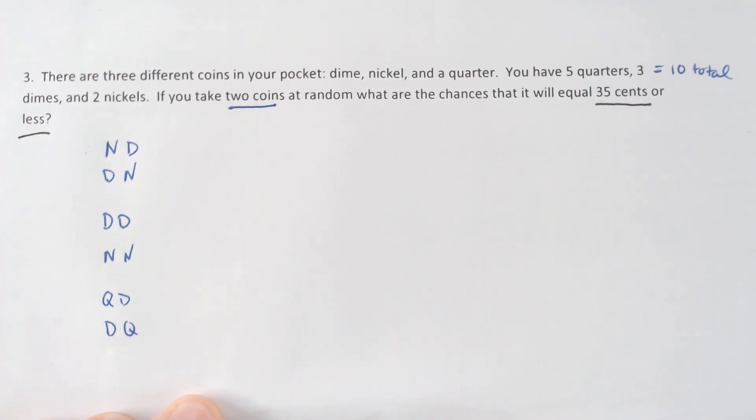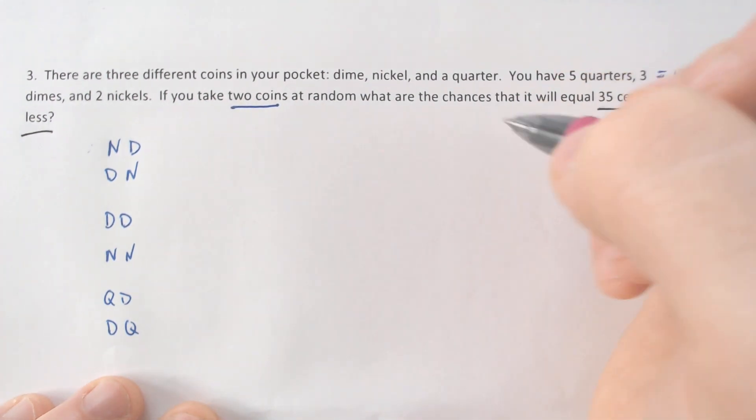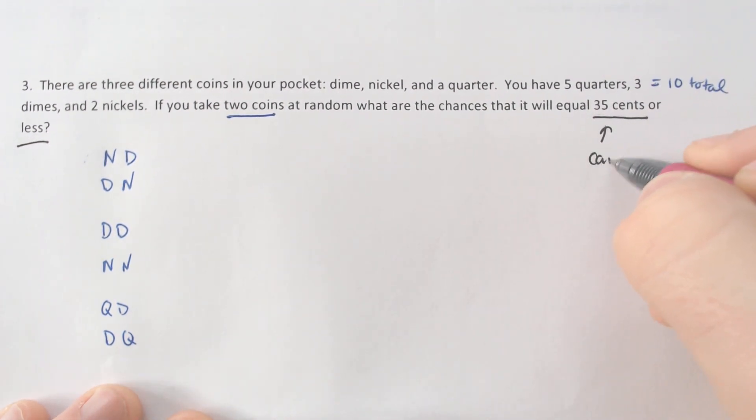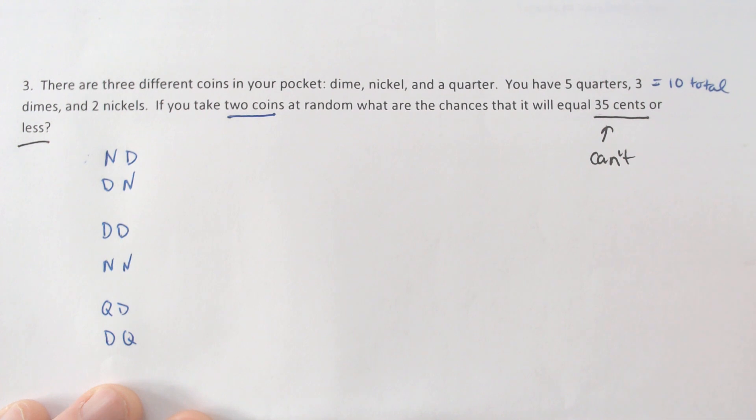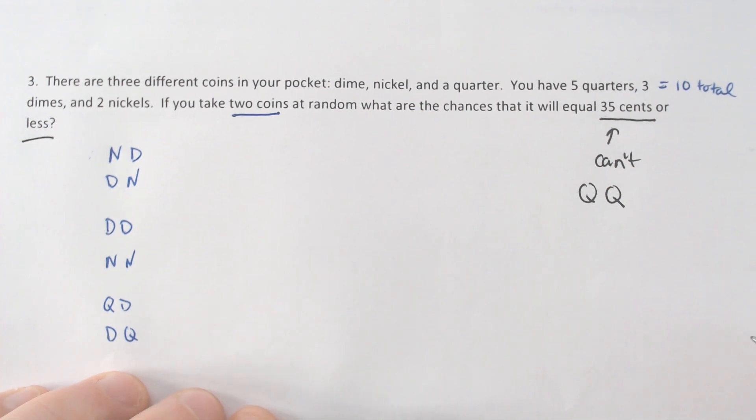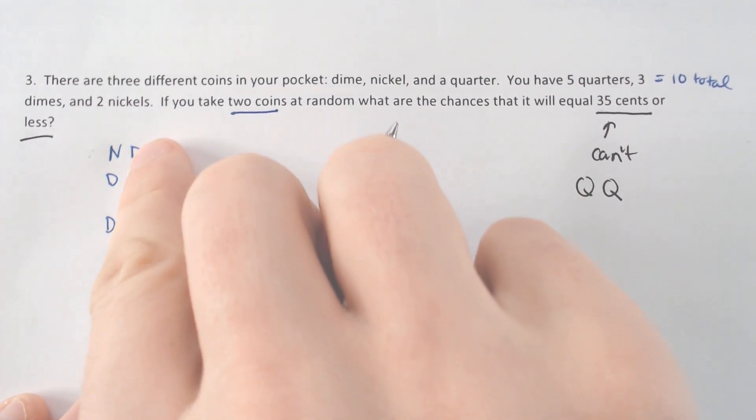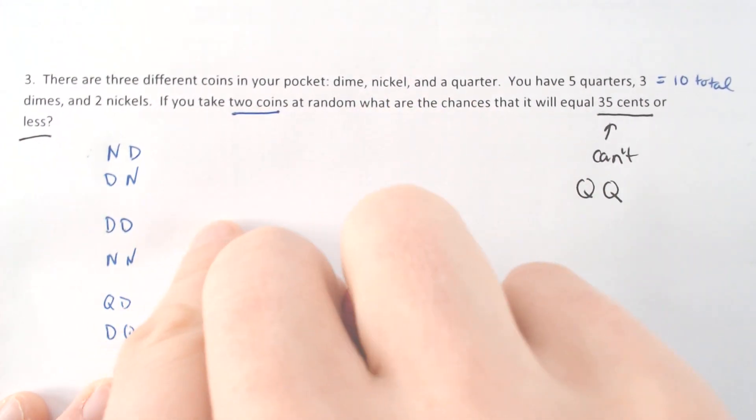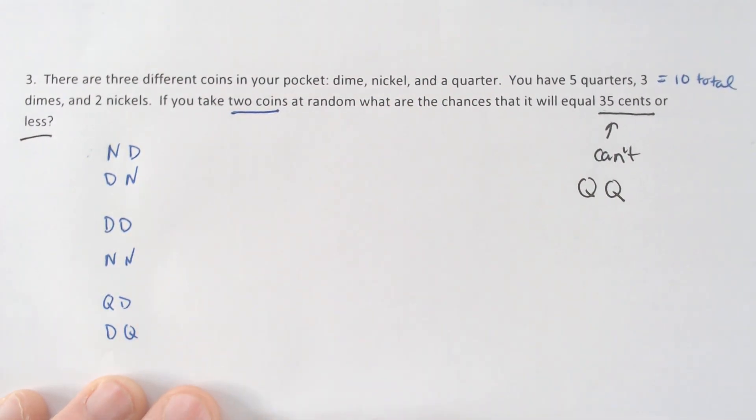But the easier way to do this one, in fact, is to actually think, what is the only way I can't have 35 cents or less? And the only way you can't do that would be to have a quarter and a quarter. And sometimes figuring out what you can't do is a whole lot easier than doing all of the things you could do, which you could do. You could do all of the probabilities here, list them out, add them all together after multiplying them.